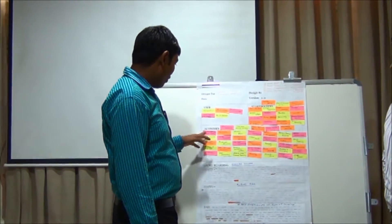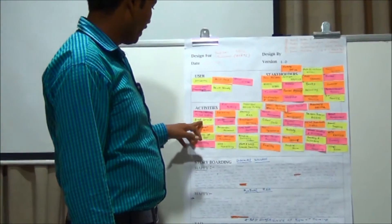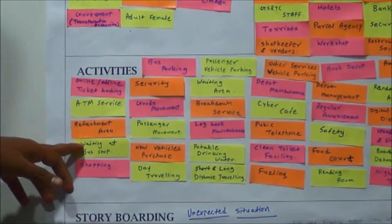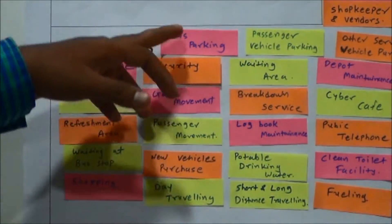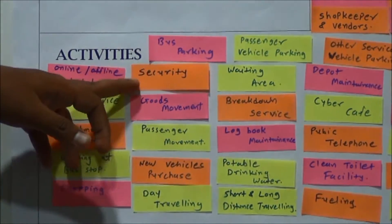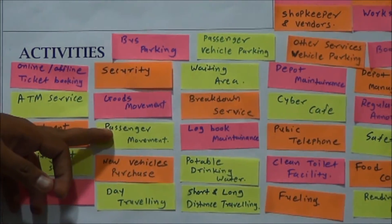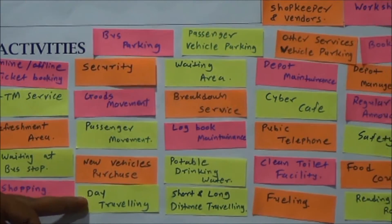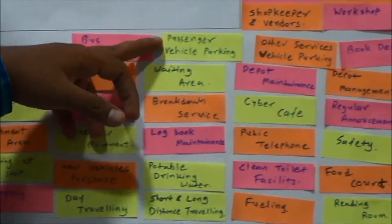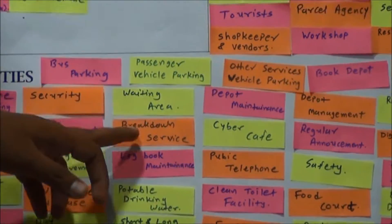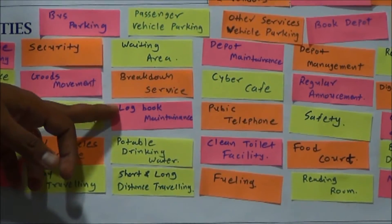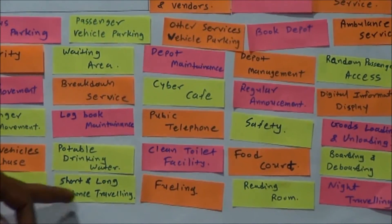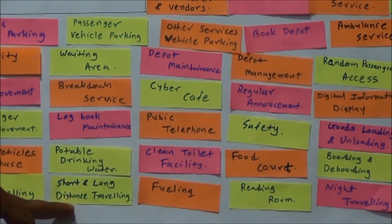The selected activities are online and offline ticket booking, ATM services, refreshment area, waiting area, shopping, bus parking, security, goods movement, passenger movement, new vehicle purchases, day travelling, passenger vehicle parking, waiting area, breakdown services, log book maintenance, portable drinking water facilities, and short and long distance travelling.